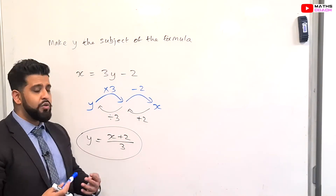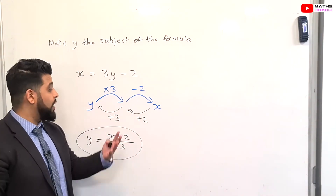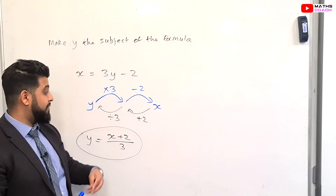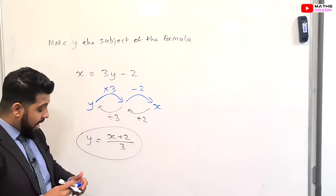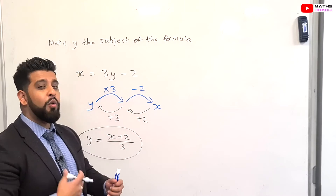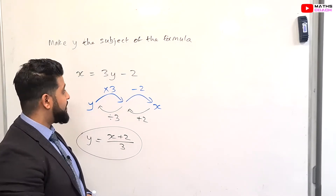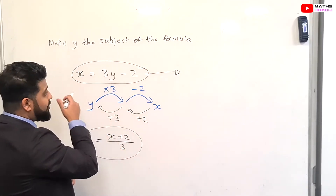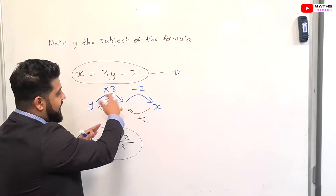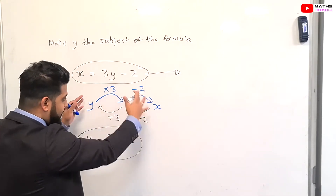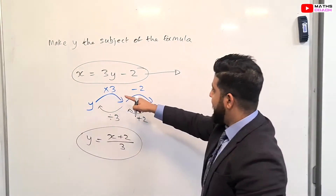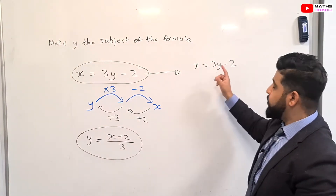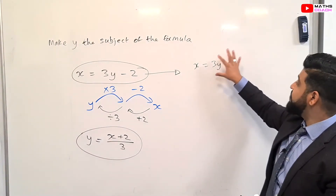I often teach this to middle ability students, but higher-end students also appreciate understanding what's going on in each step. I'll also show you a quicker, more conventional method that many of you may be more used to. What you do is apply the reverse operation each time. So looking at x = 3y − 2, you want to isolate y — get y on its own by getting rid of everything around it.